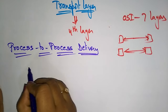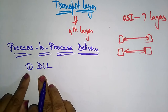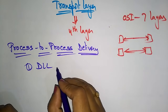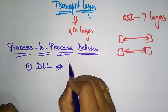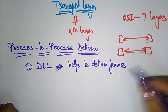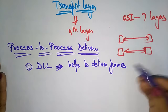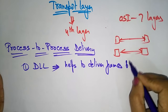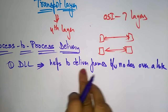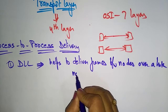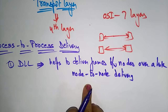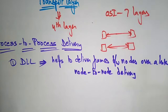Let's recall: if you take the data link layer, the data link layer helps to deliver frames between neighboring nodes over a link. So that's why we call it node-to-node delivery. The data link layer delivers frames between nodes, so it is called node-to-node delivery.